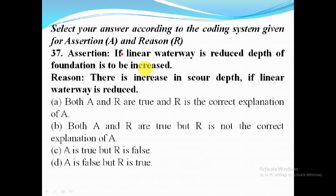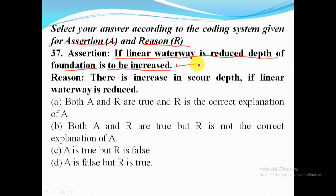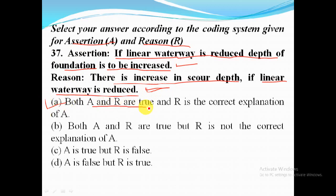Assertion A: if linear waterway is reduced, depth of foundation is to be increased — this is correct. Reason R: there is an increase in scour depth if linear waterway is reduced — this is also correct and is the correct explanation of A. So option A — both A and R are true and R is the correct explanation of A — is the answer.